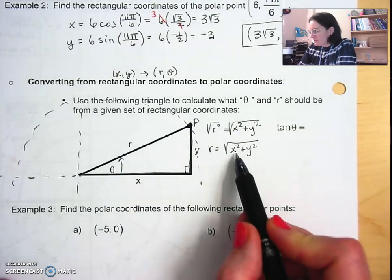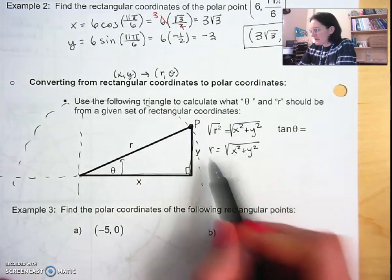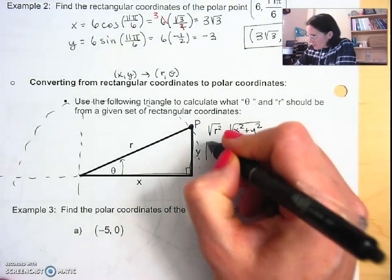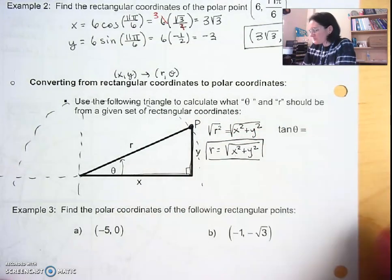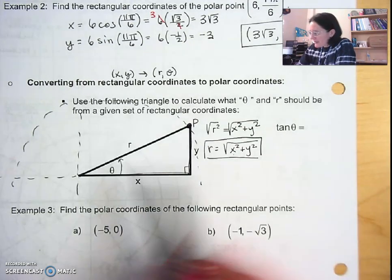This is great because if we already know x and y because we're given the rectangular coordinates, we just plug it in and we can find the radius that we need for our polar coordinates.